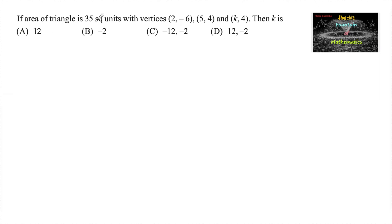If the area of triangle is 35 square units with vertices A(2,-6), B(5,4), and C(k,4), then let A, B, and C be the vertices of triangle ABC. It's given that area of triangle ABC is 35 square units.